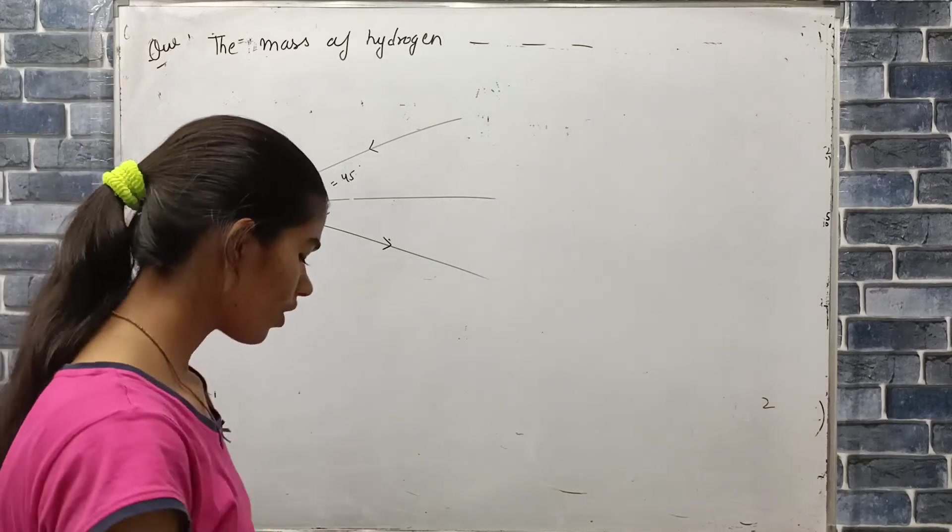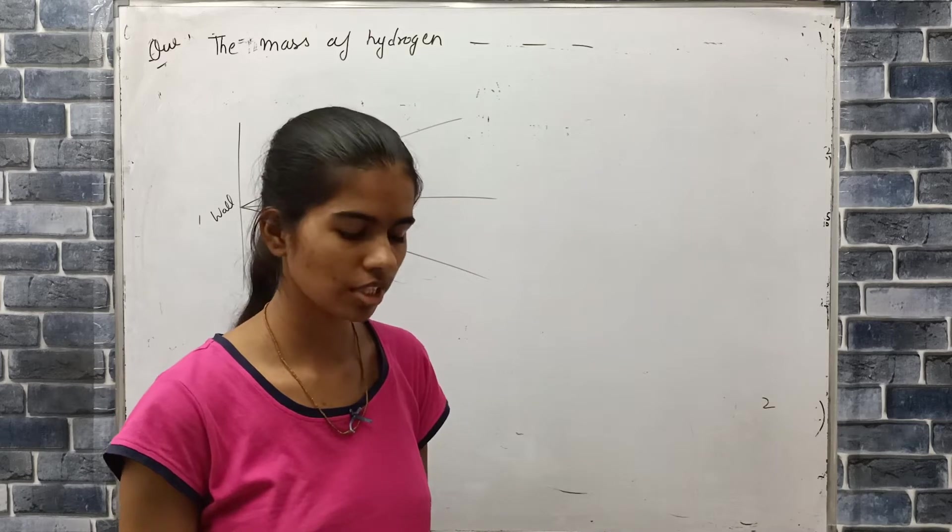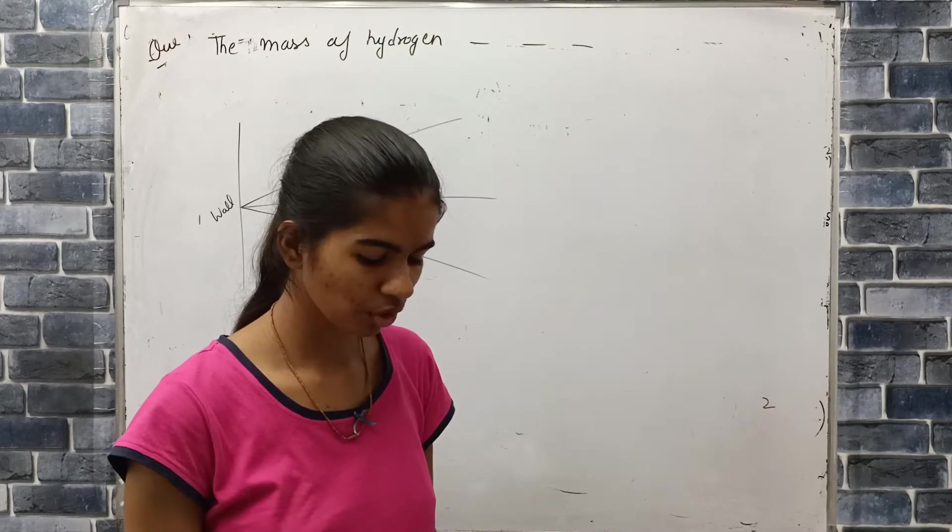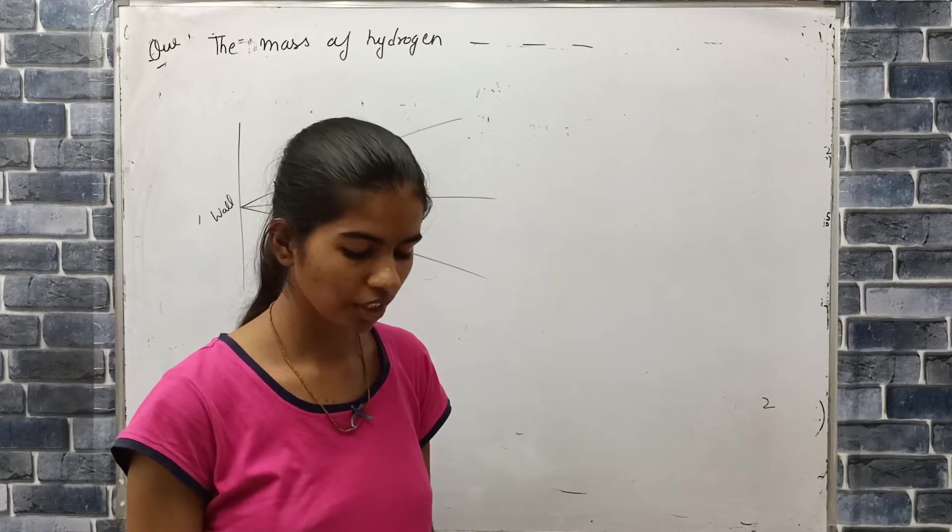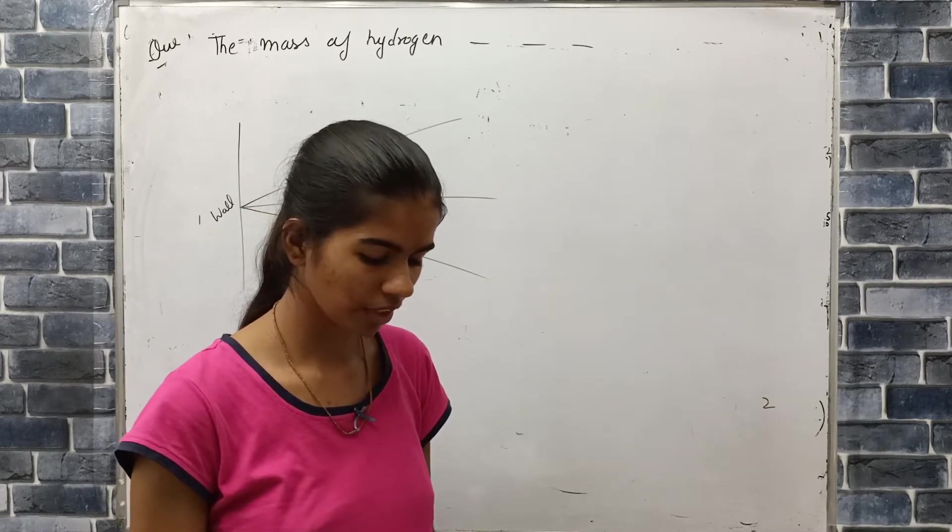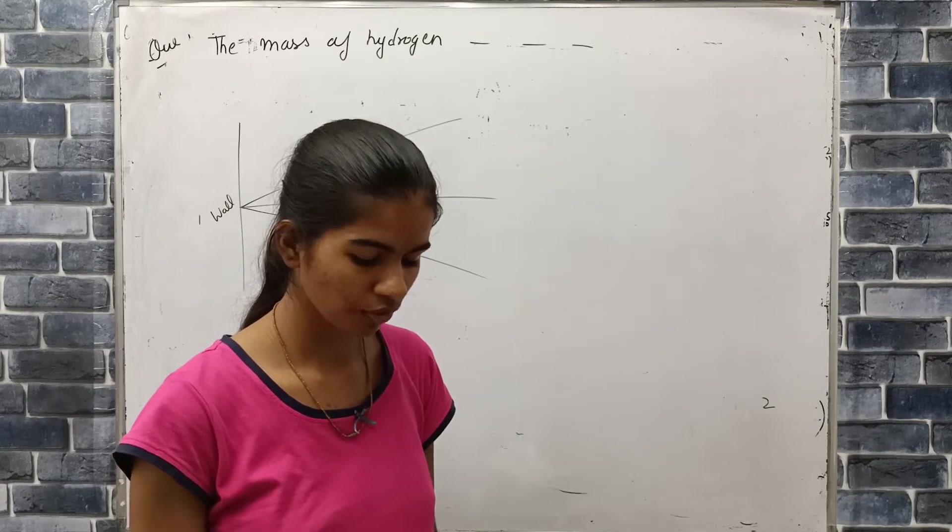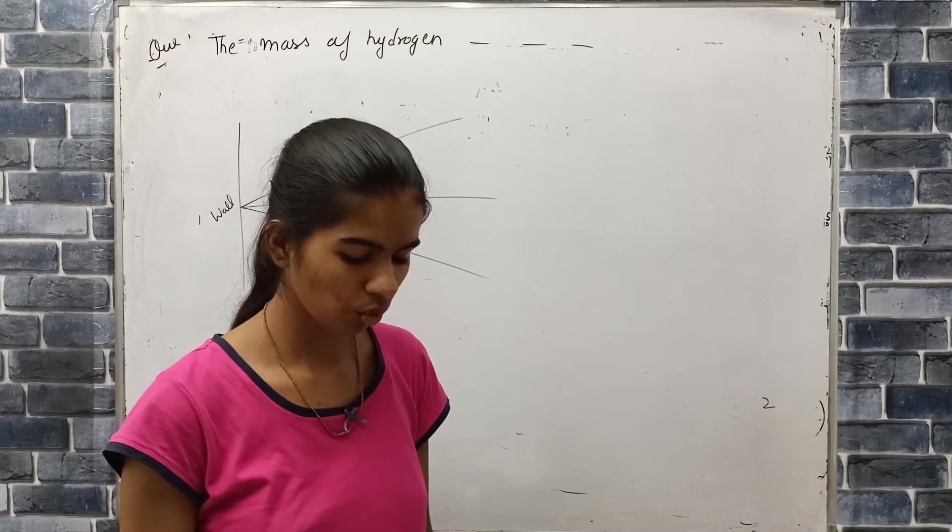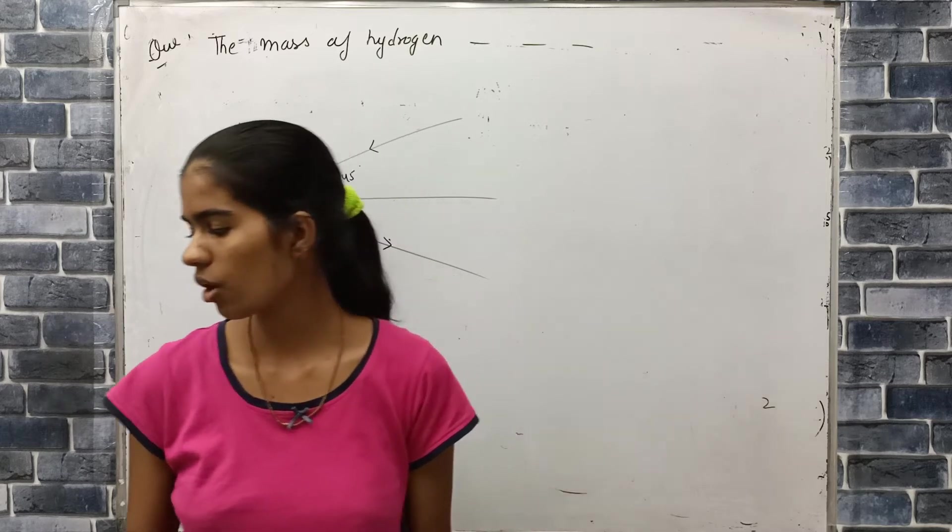The question is: the mass of hydrogen molecule is 3.32 into 10 to the power minus 27 kg. If 10 to the power 23 hydrogen molecules strike per second at 2 cm square area of a rigid wall at an angle of 45 degrees from the normal and rebound back with a speed of 1000 meters per second. The pressure exerted on the wall is?